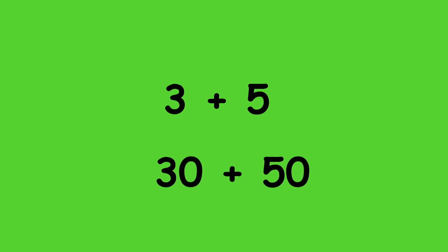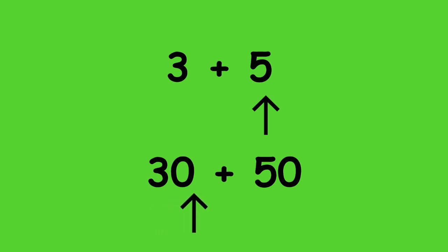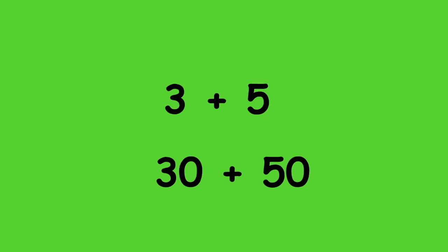You are correct. There are two ways that these addition sentences are alike. First of all, they're both addition sentences, so they both involve adding, but also they both have a 3 and a 5 in them. Noticing these similarities, how can we use 3 plus 5 to help us solve for 30 plus 50?